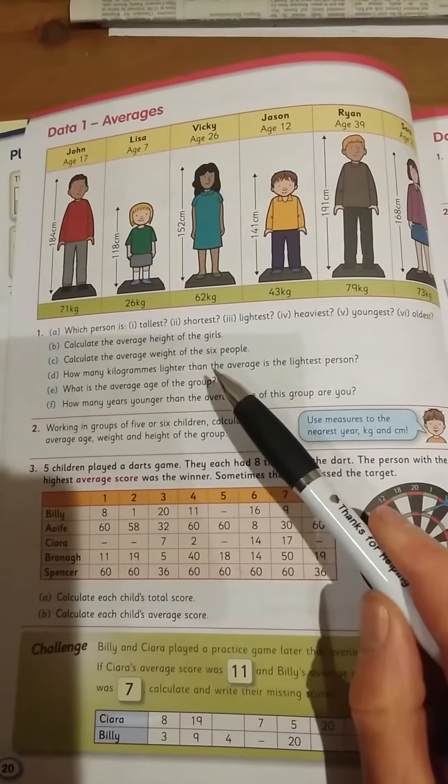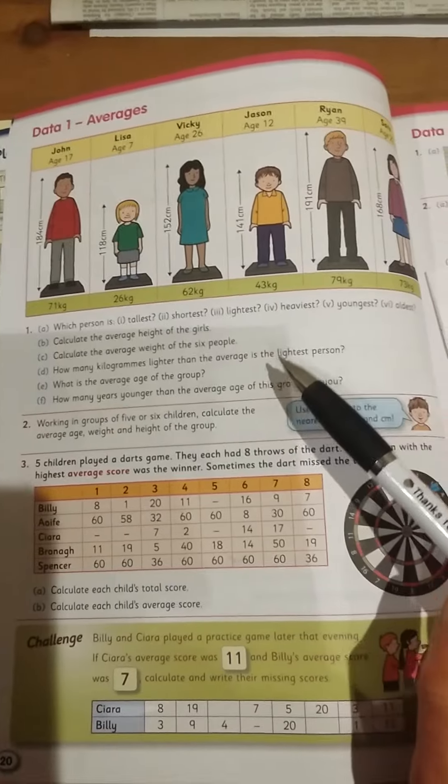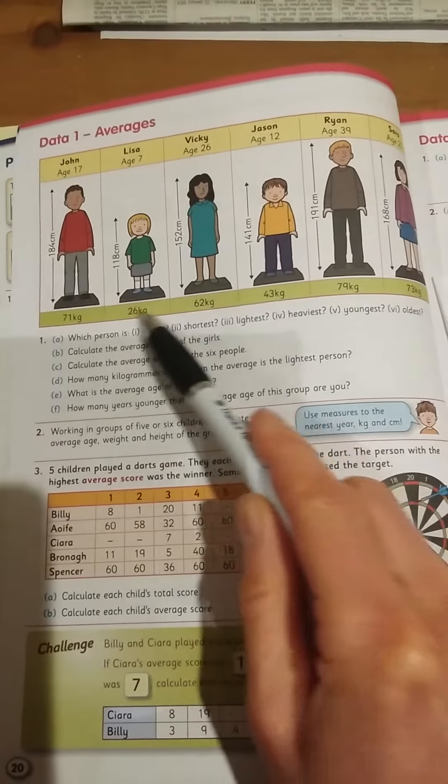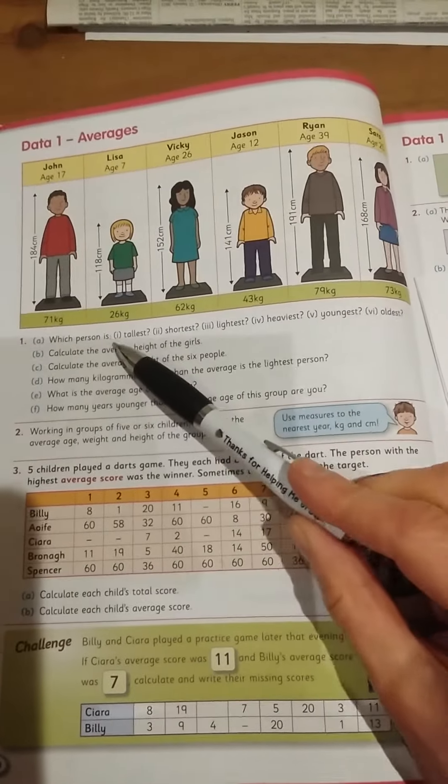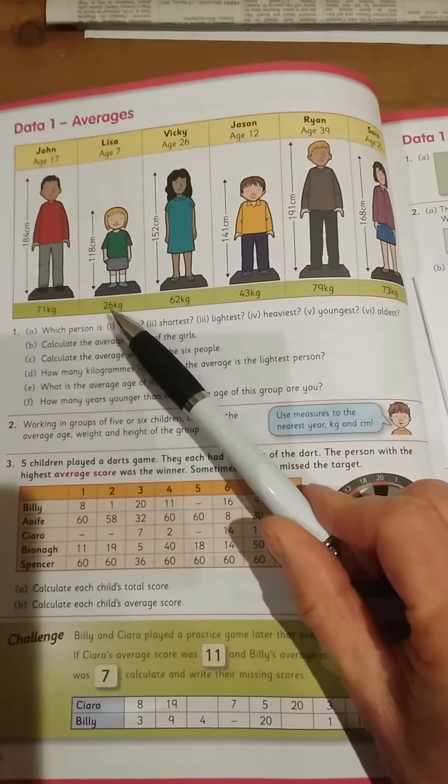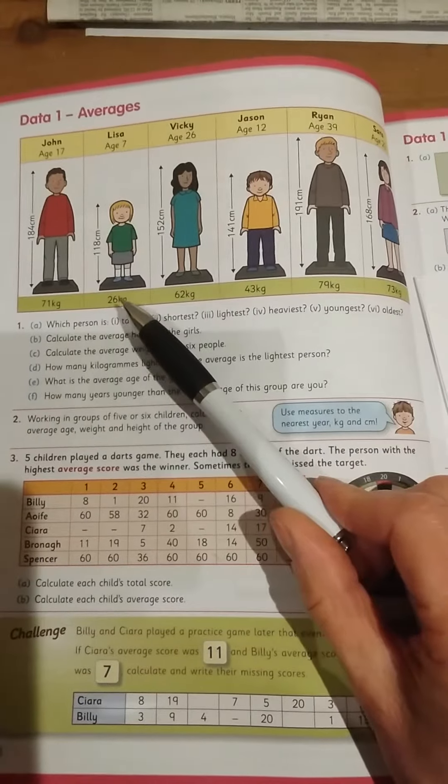How many kilograms lighter than the average is the lightest person? So you see who's the lightest person here, and you get the average weight and you take away the lightest person. I think we can tell you that the lightest person here is going to be Lisa.